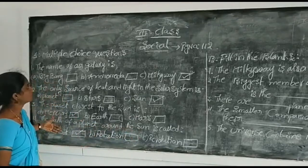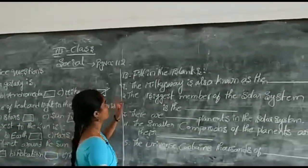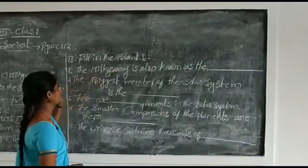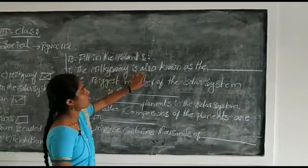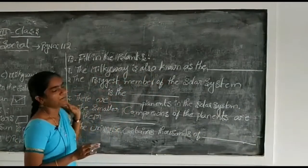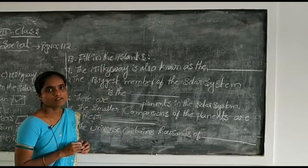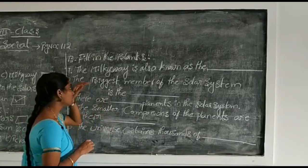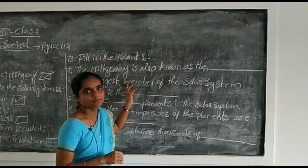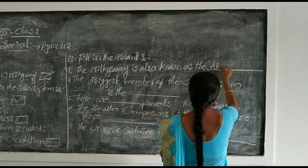These are all multiple choice questions. Now section B is fill in the blanks. The Milky Way is also known as the what? We have learned this very well in this lesson. The Milky Way is also known as Akash Ganga.